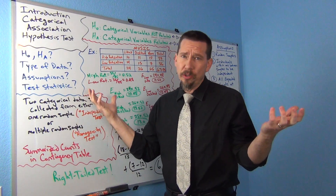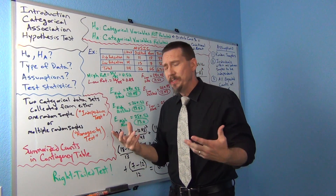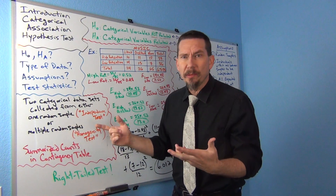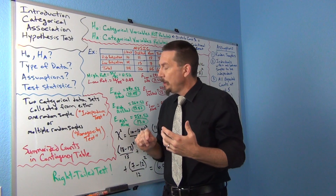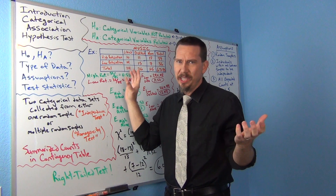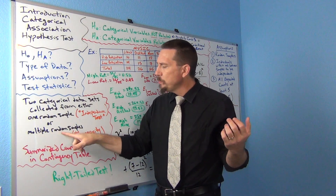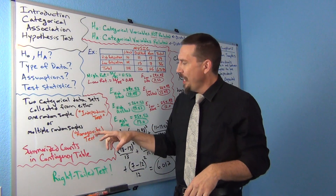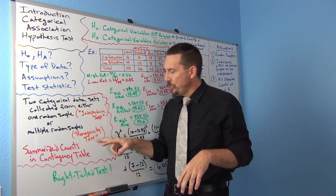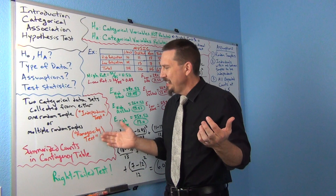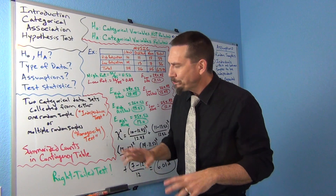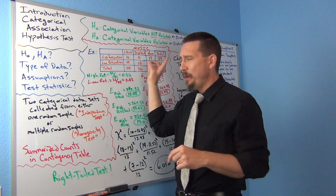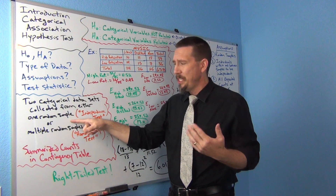I refer to both of these as a categorical association test. Now there are slight differences. If you have one random sample and ask two categorical questions, people in the stat world sometimes refer to that as an independence test. If you have multiple random samples — where you collected different random samples for your groups and asked one categorical question in each — some stat books call that a homogeneity test. But really it's the same idea; it's just a matter of semantics about how the data was collected.